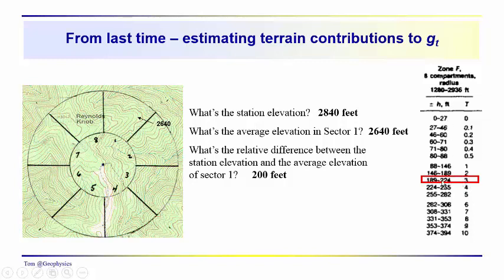And so this is kind of a general range here extending from 189 to 224 feet. And these numbers are in hundredths of a milligal. So that's kind of the process that we would go through and we did that for this first sector. So we have a contribution of 0.03 milligals. We need to do it for each sector in the ring in order to get the total effect associated with the topography between these two distances, 1280 and 2936.